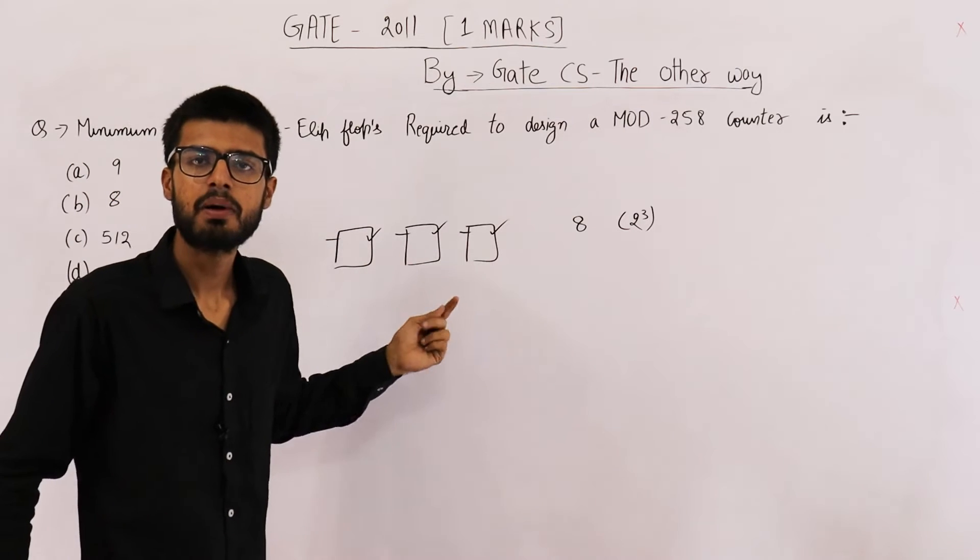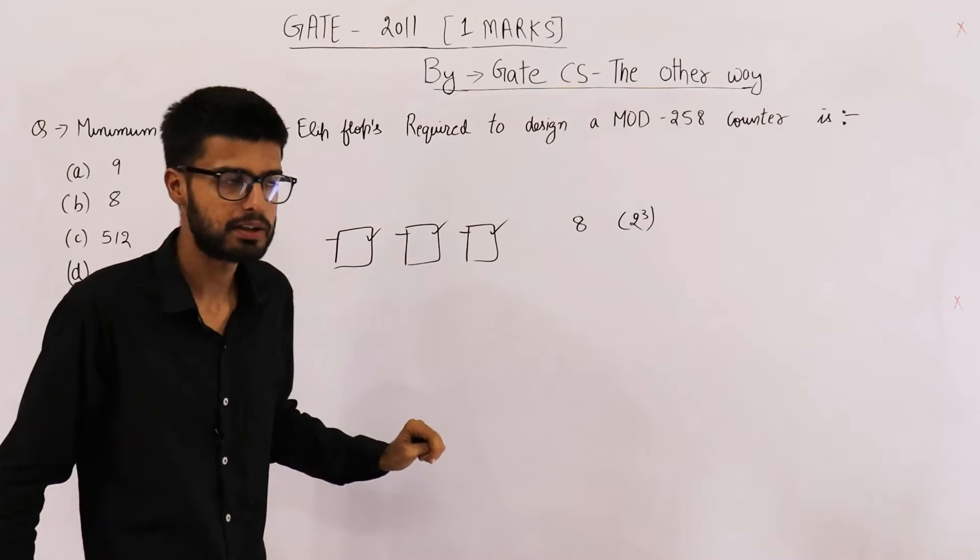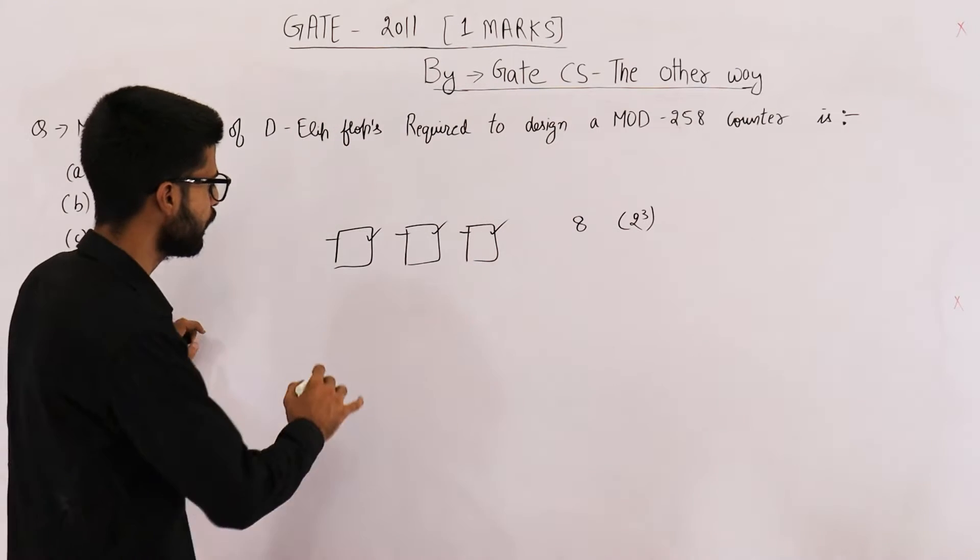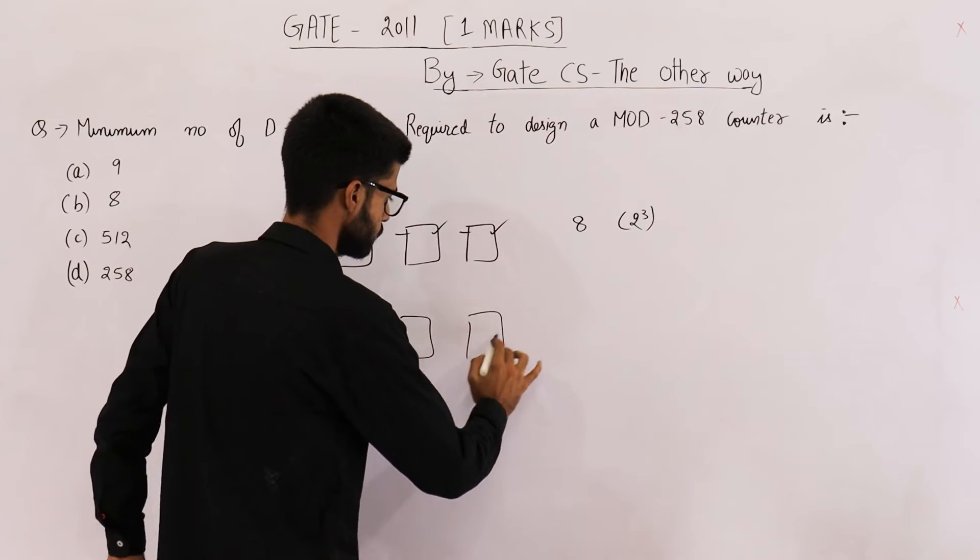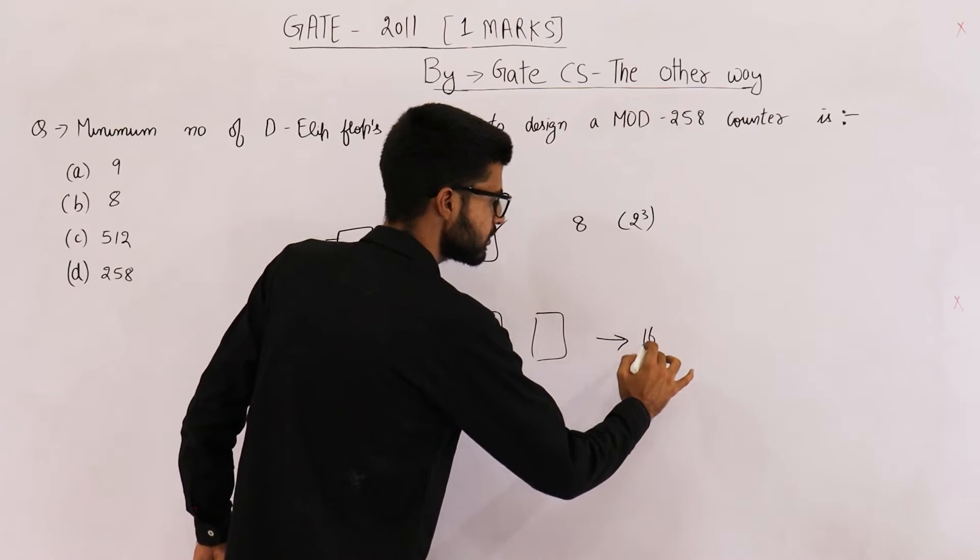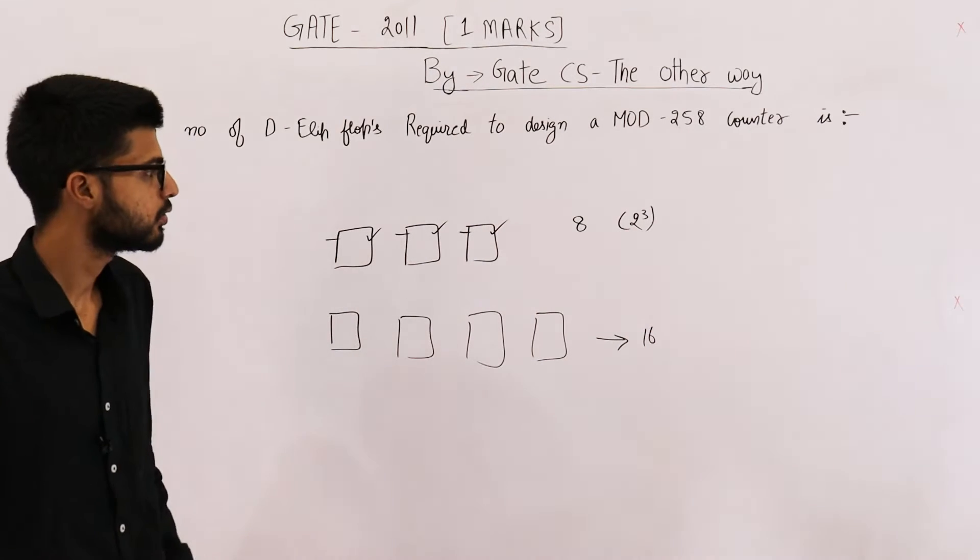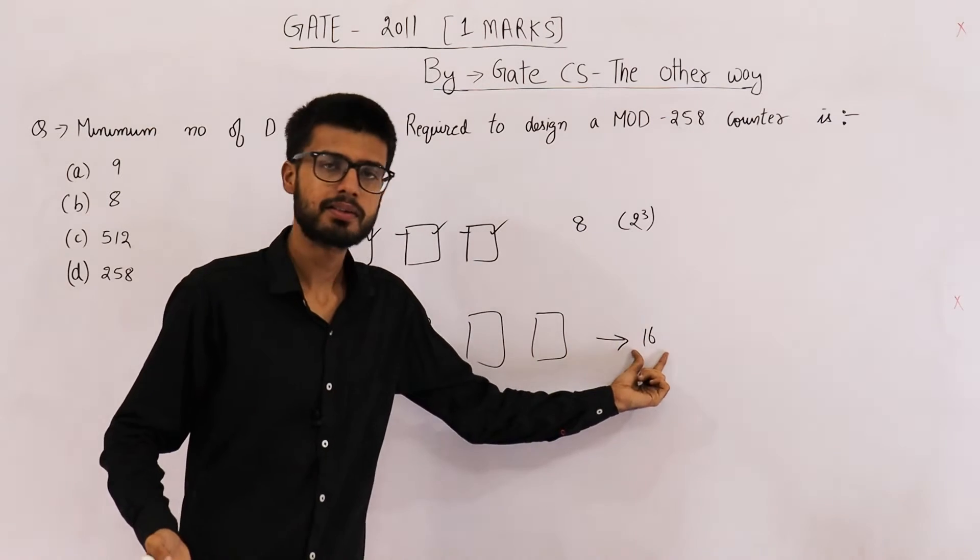Similarly, if you have four flip-flops, you will be able to produce 16 different states. So this is a mod 8 counter, this is a mod 16 counter.